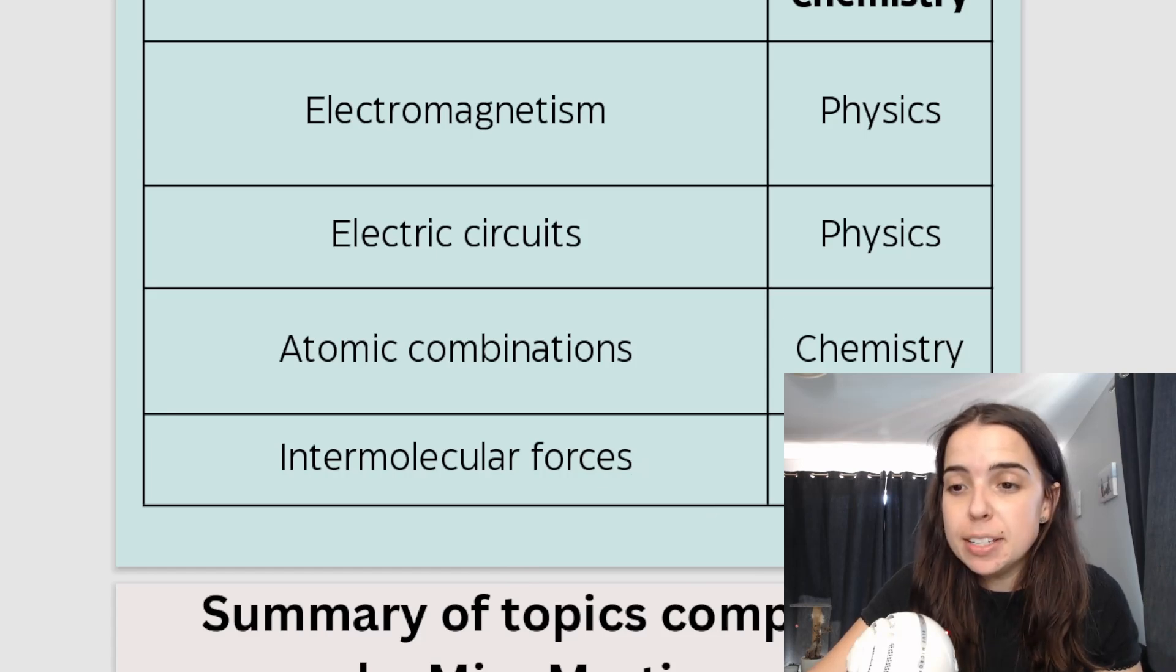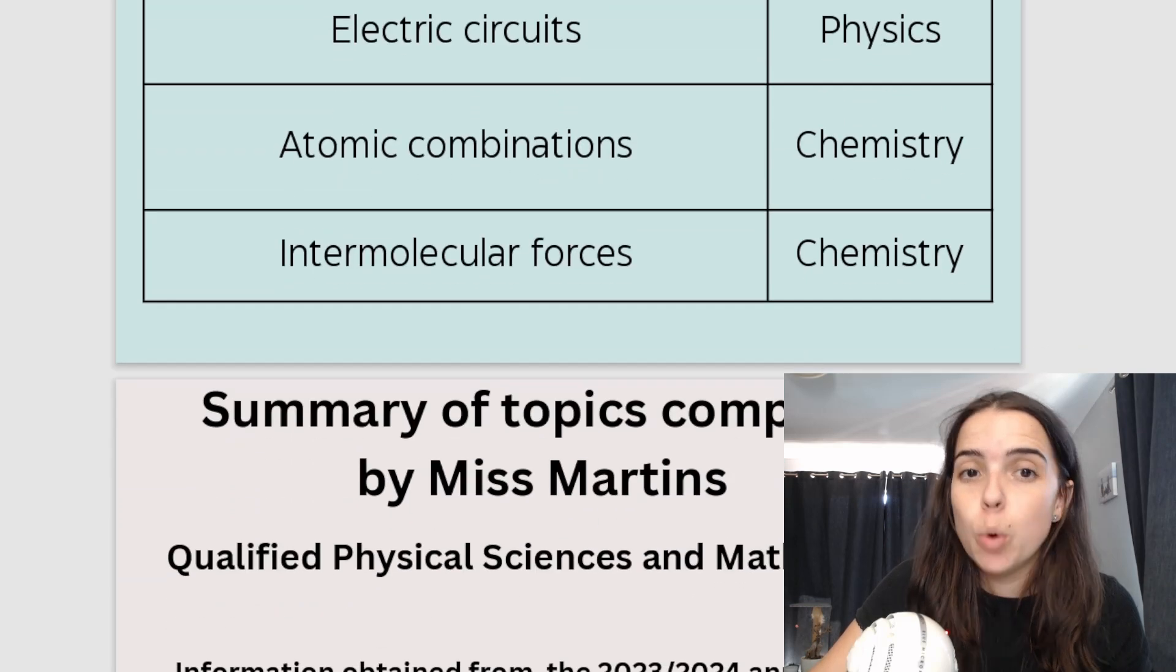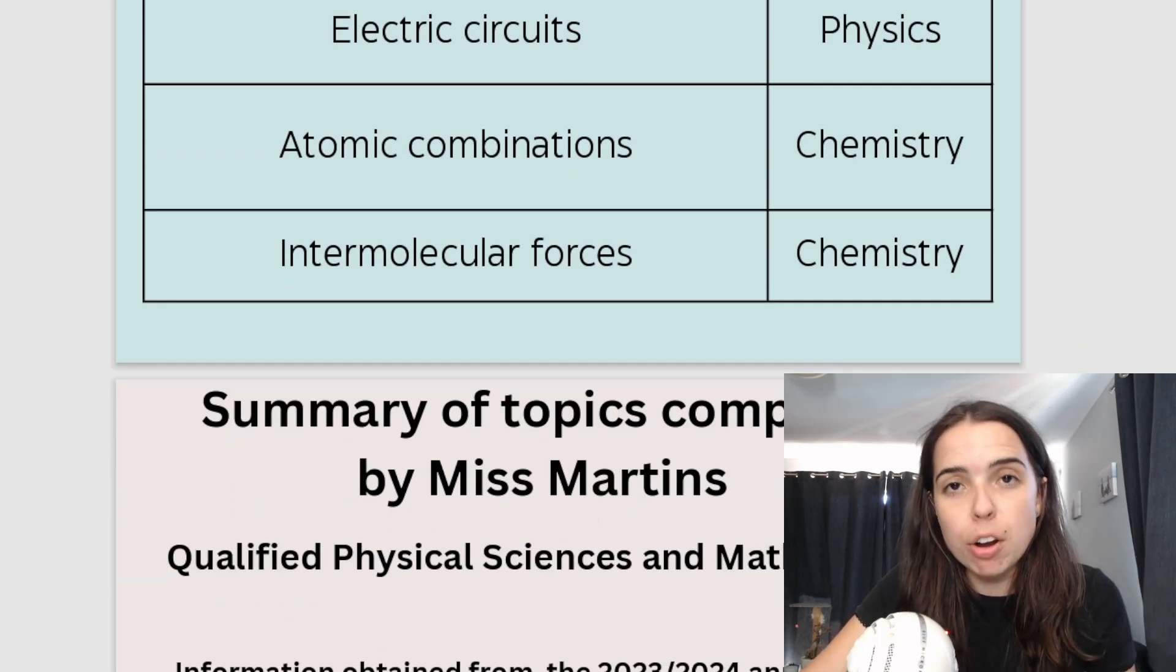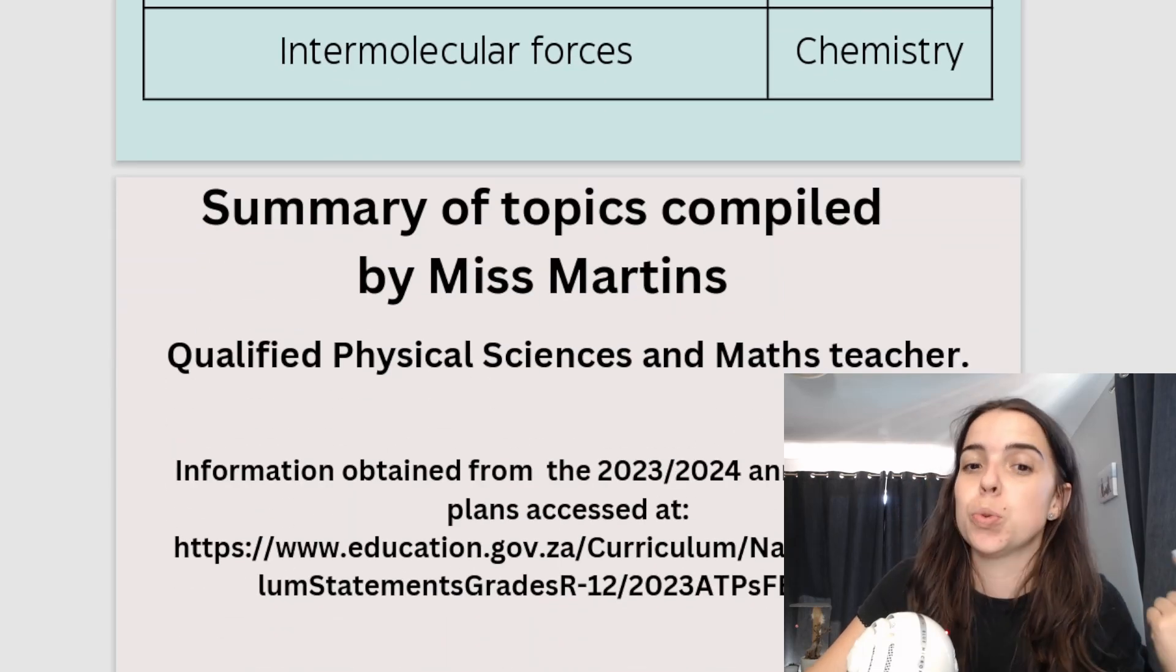So we've got electromagnetism, which is a physics topic, electric circuits, which is a physics topic. We've got atomic combinations, so that's all about chemical bonding and all of that stuff. It's chemistry. And intermolecular forces, which is also chemistry.